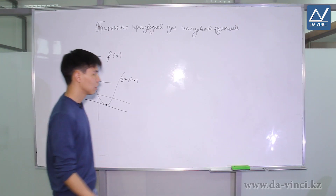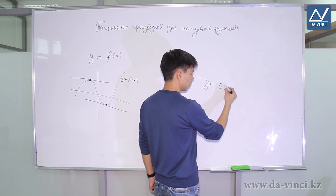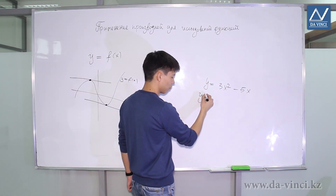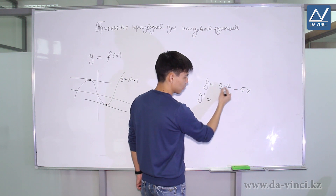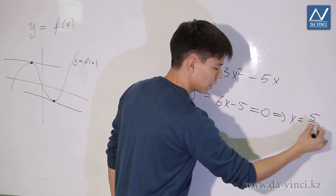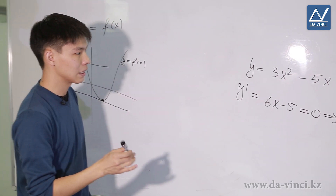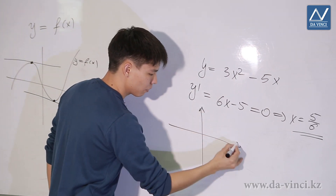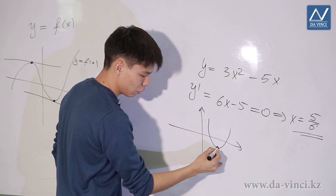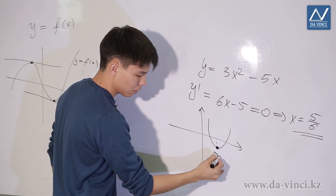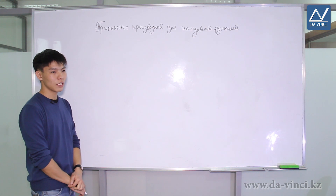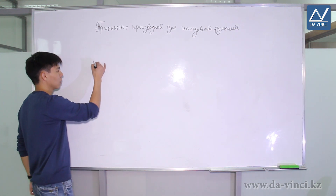Let's consider an example with the function y = 3x² - 5x, and find its extremum points. We find the derivative y' = 6x - 5 and equate it to 0, giving x = 5/6. So an extremum can be reached at the point x = 5/6. Since the graph is a parabola, an extremum is indeed reached at its vertex — it is a minimum point at x = 5/6.